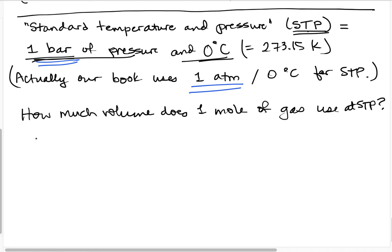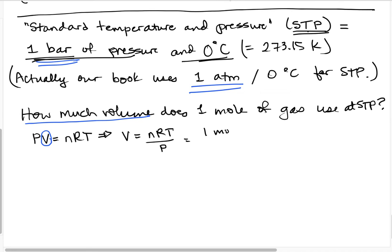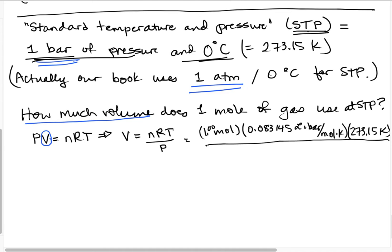Let's calculate how much volume one mole of gas uses at STP. We have the ideal gas law PV = nRT, and we're solving for V, so V = nRT/P. With one mole of gas, using R = 0.083145 liter·bar per mole·Kelvin, a temperature of 273.15 Kelvin, and a pressure of one bar, we find that the volume taken up by one mole of gas is 22.7 liters.